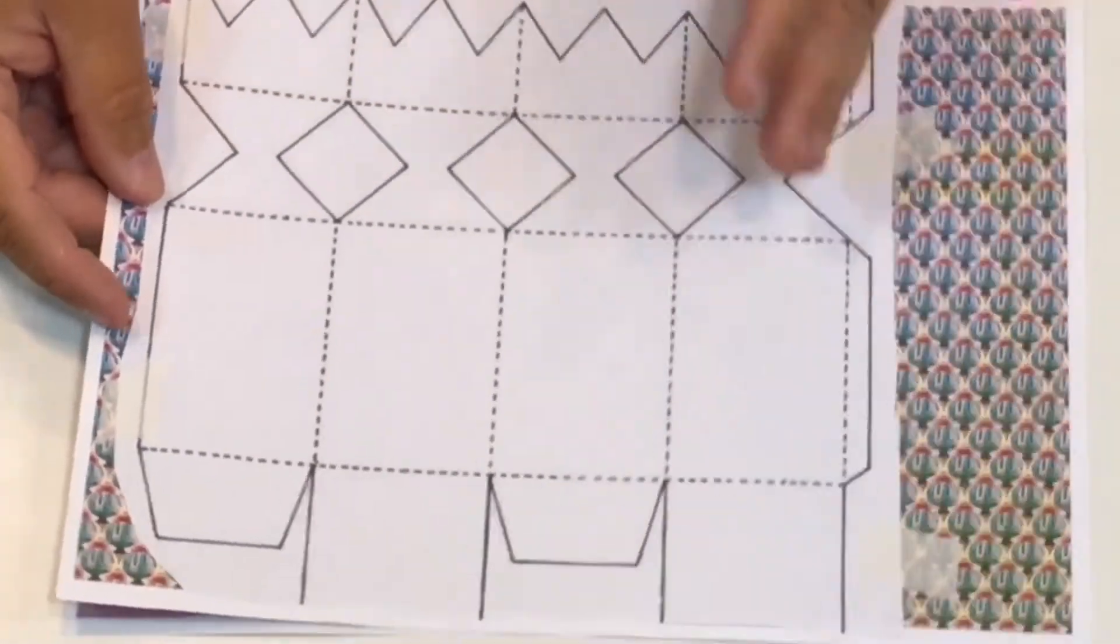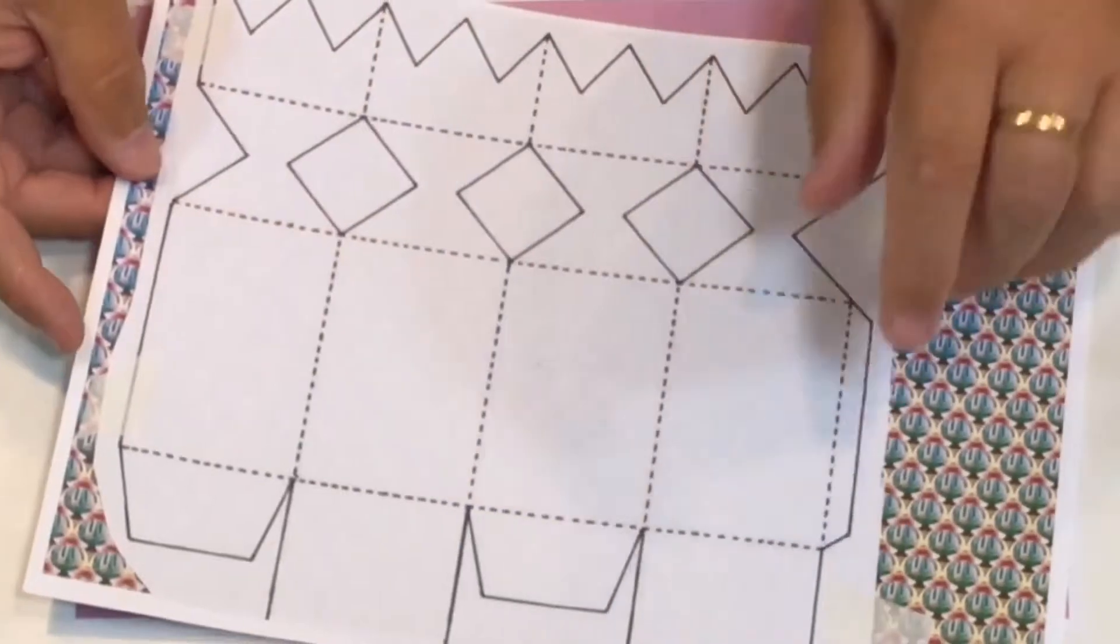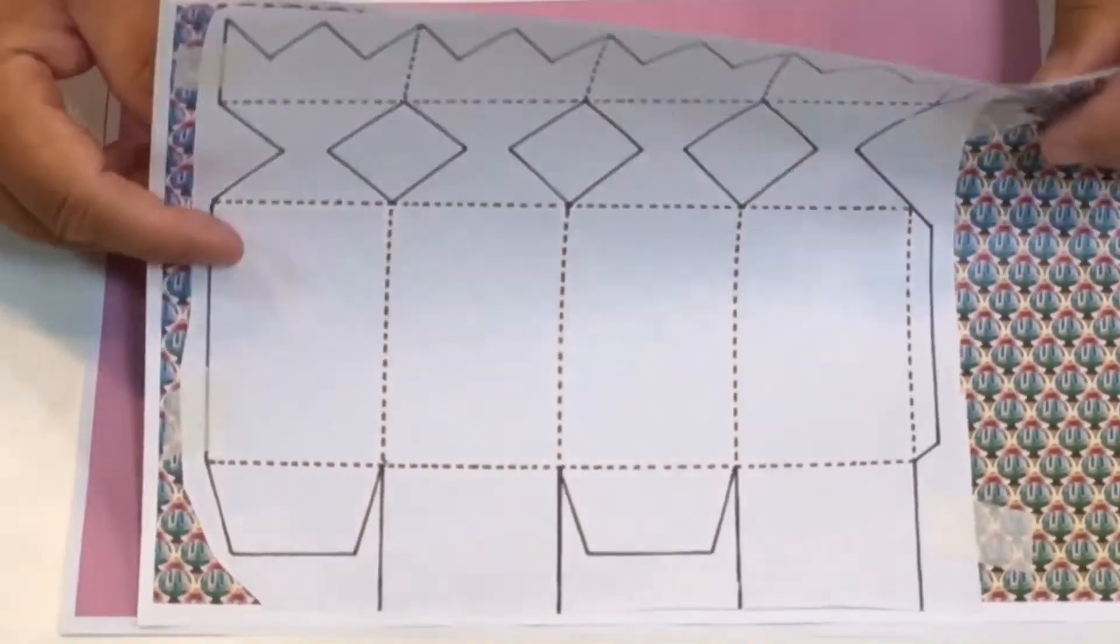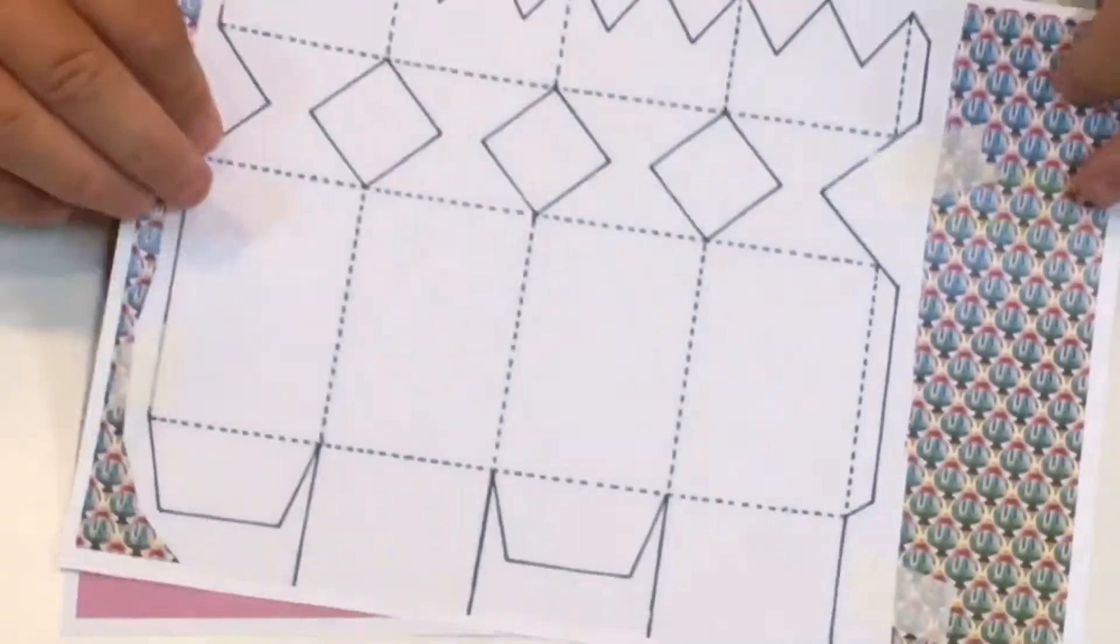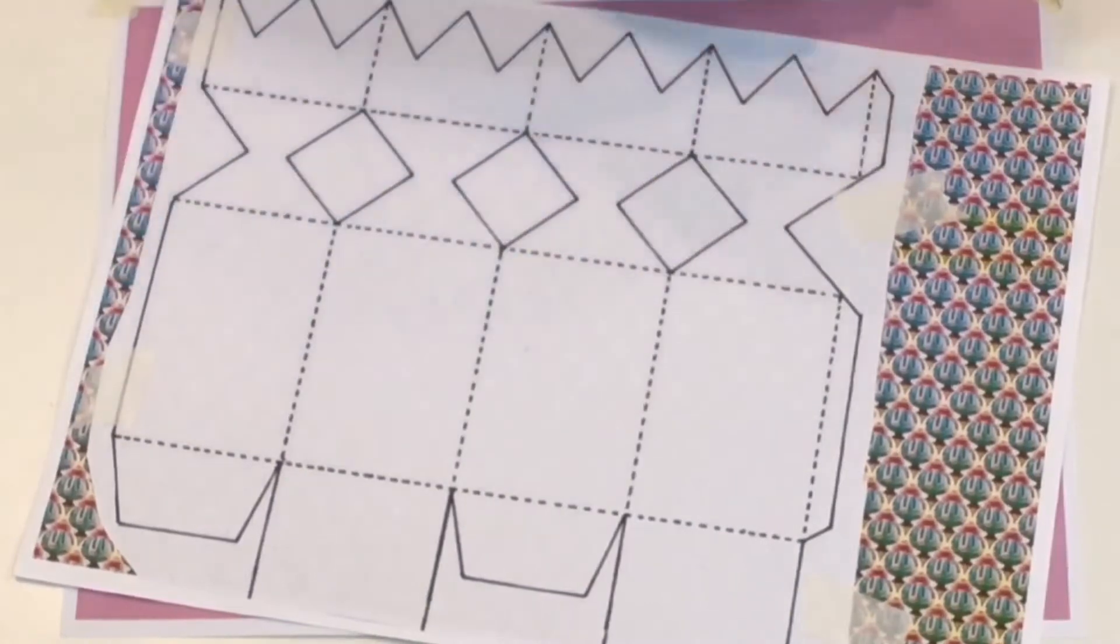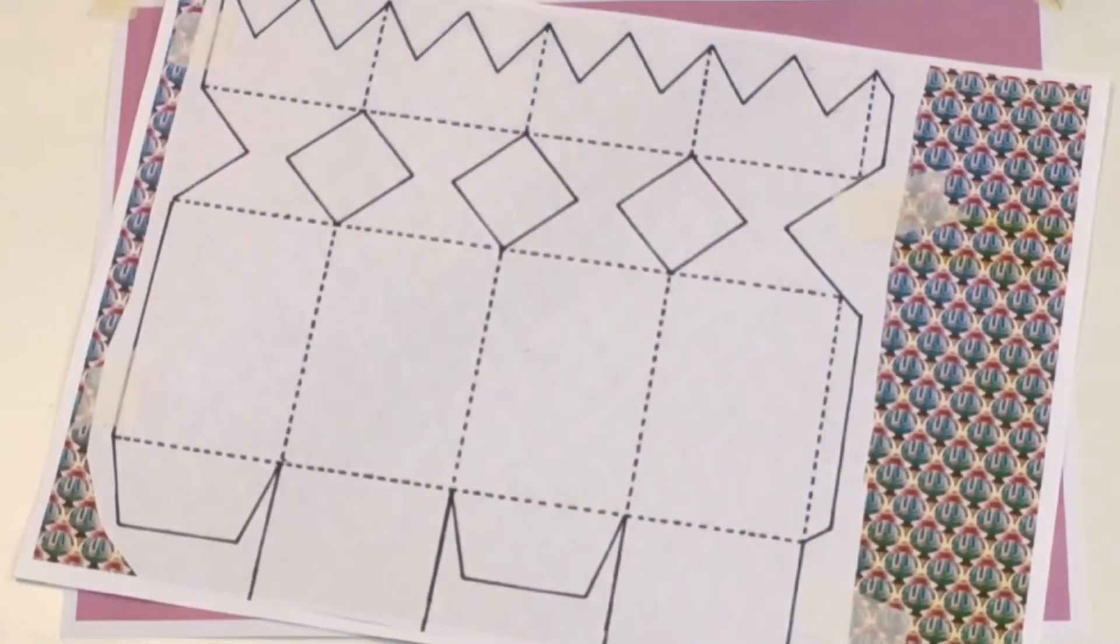So what you do then is take the design that you want, the template, and then just trim it down. And just using a little bit of masking tape, just hold it in position. I've got it double-sided here as you can see.